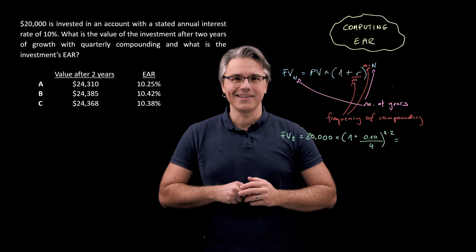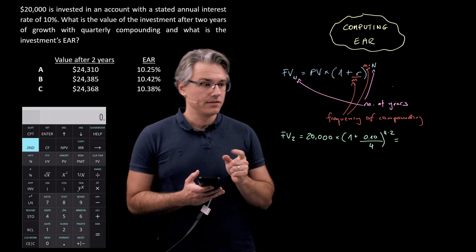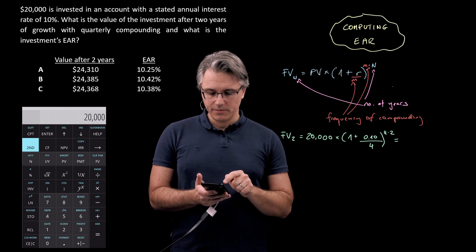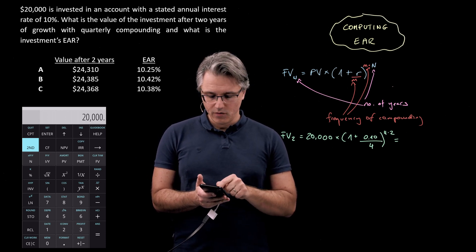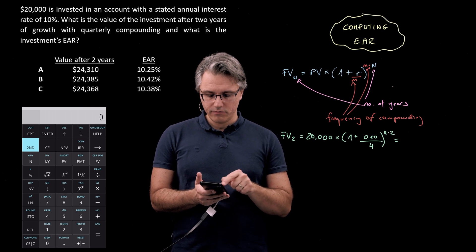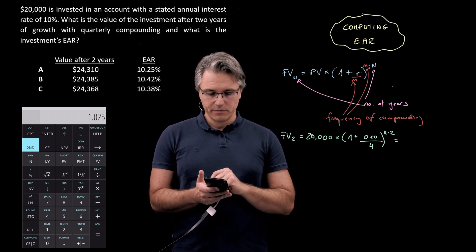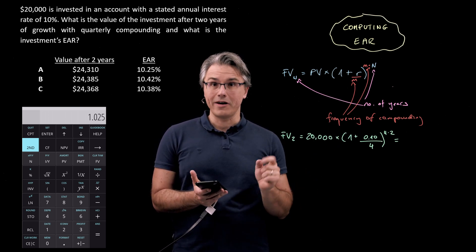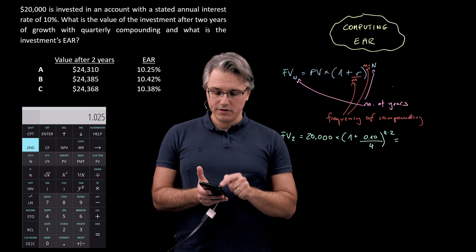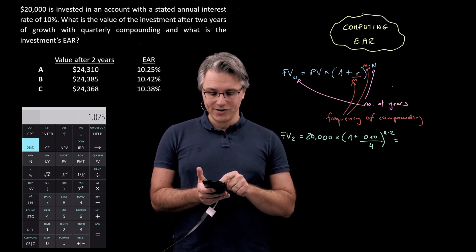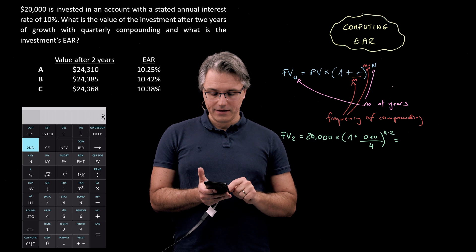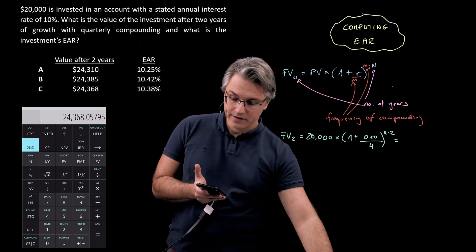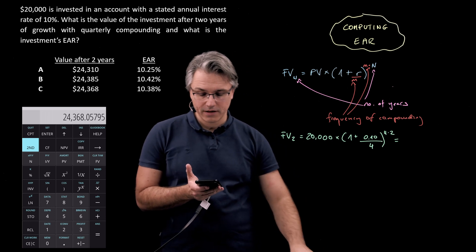Let's switch to the calculator view. Let's input this into the calculator. We've got 20,000 times open the bracket 1 plus 0.1 divided by 4 close bracket and I'm going to raise this to the power of 4 times 2 so 8. So I'm pressing the y to the power of x key followed by the digit 8 and now equals and as you can see the answer is 24,368.